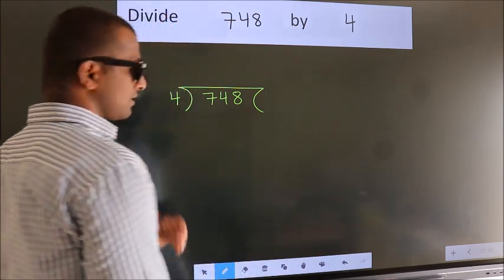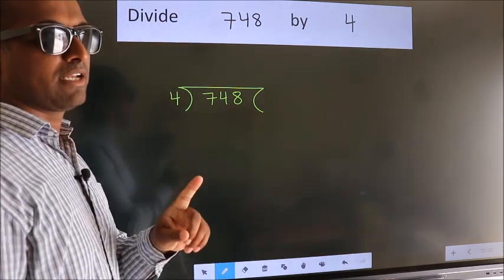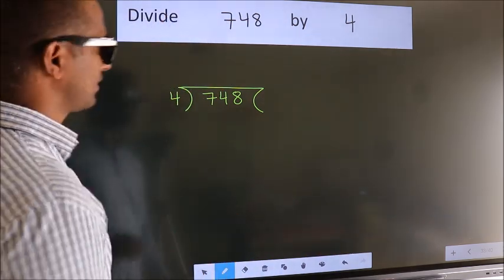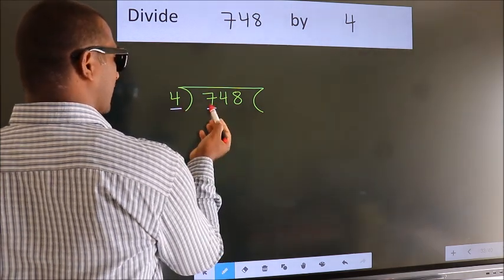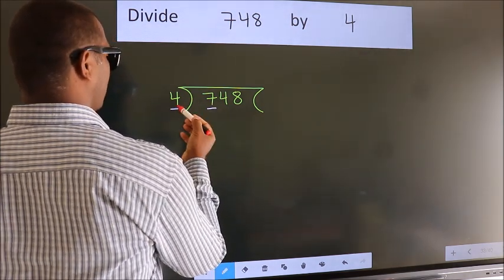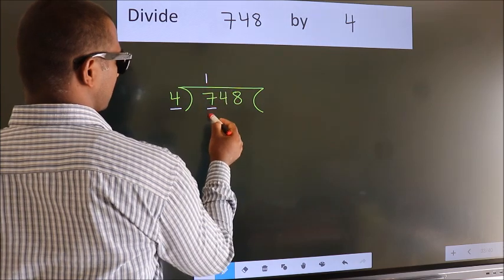This is your step 1. Next, here we have 7. A number close to 7 in the 4 table is 4 once 4.